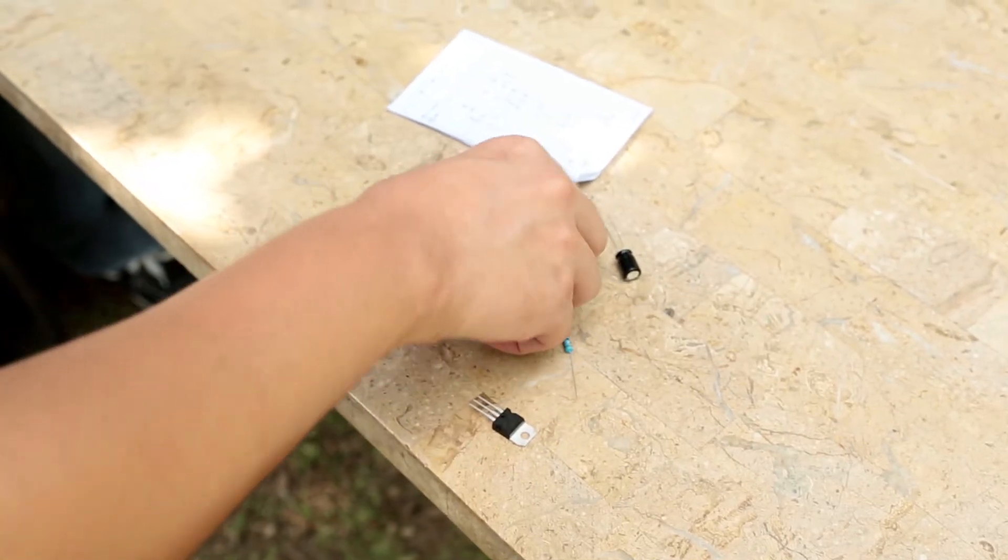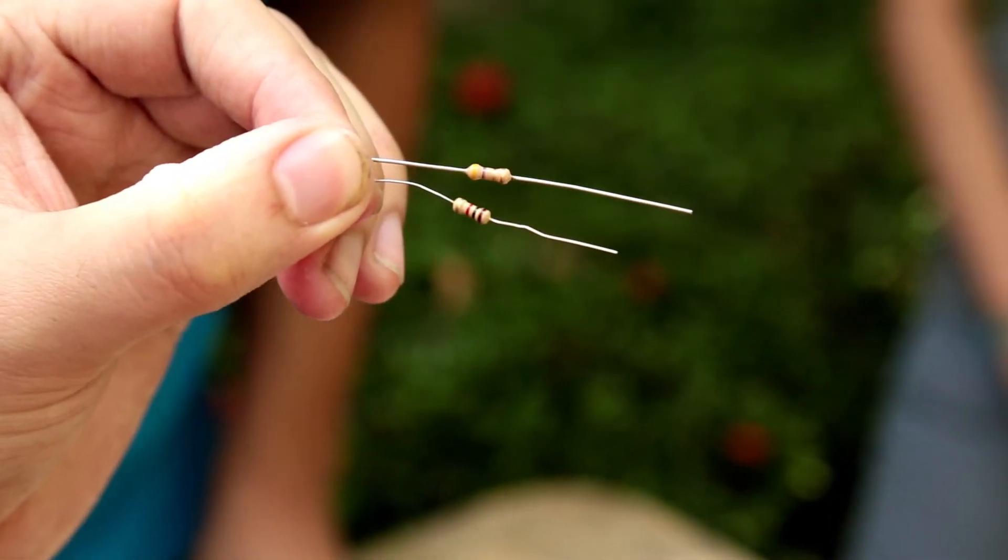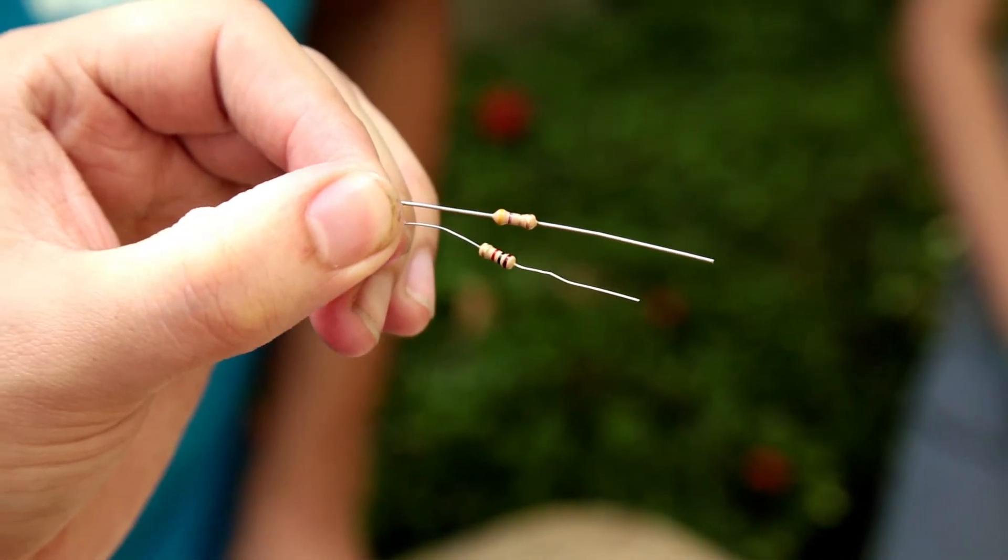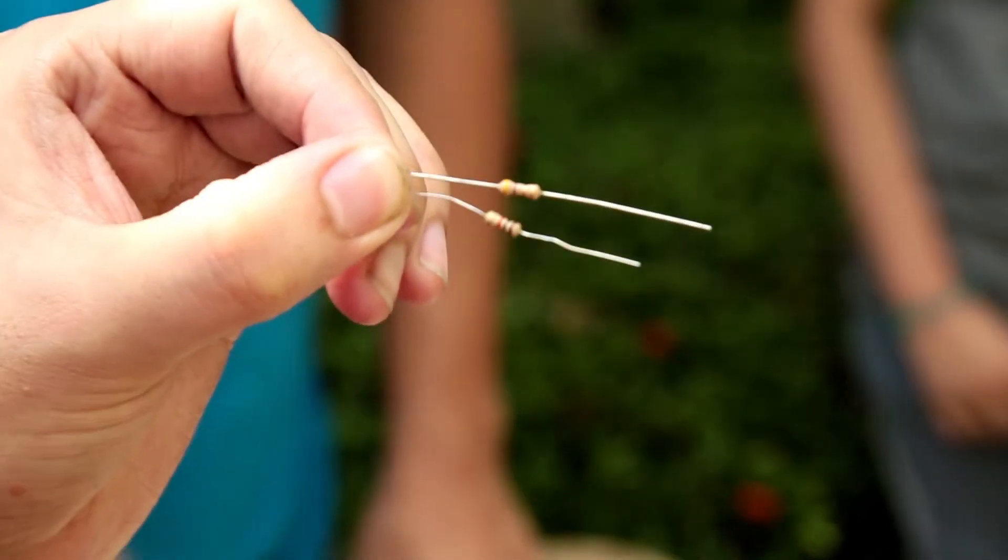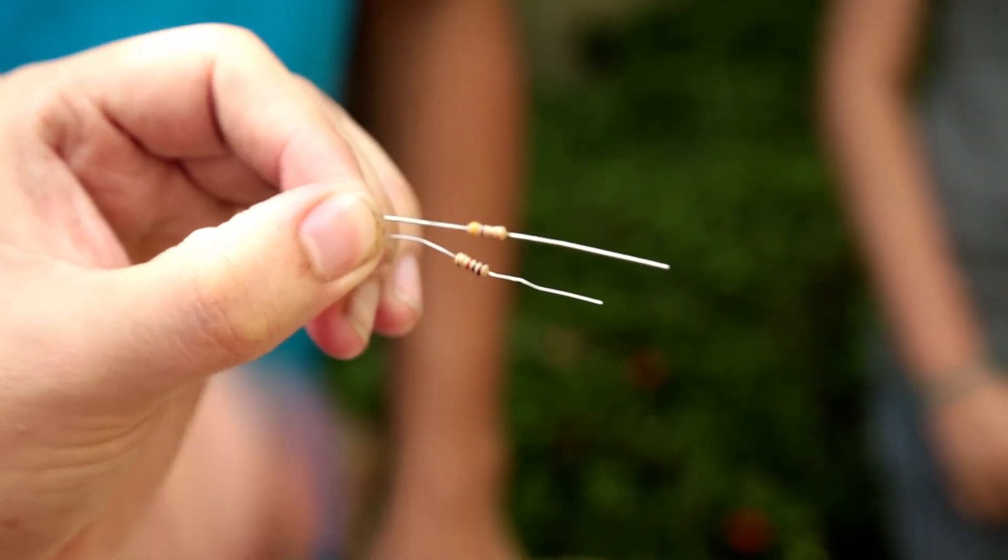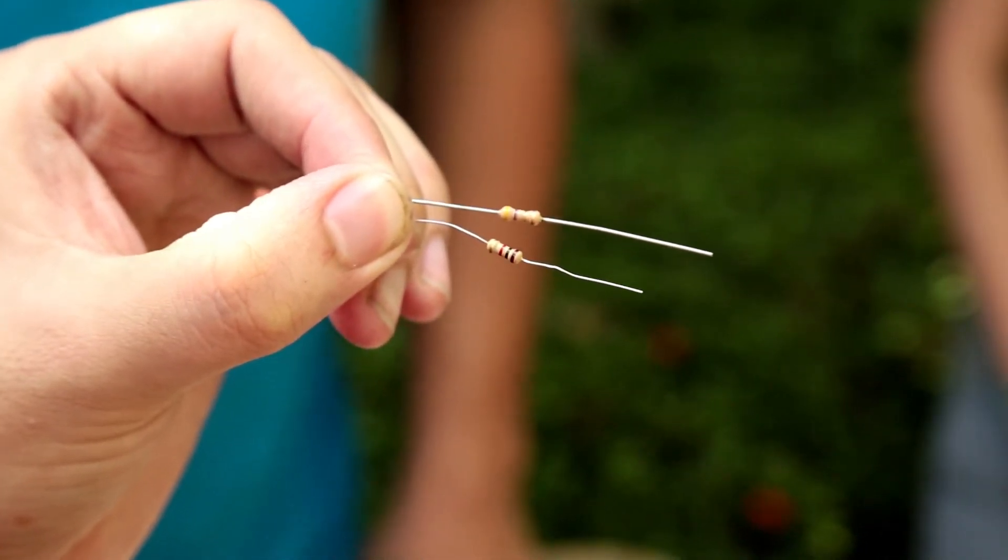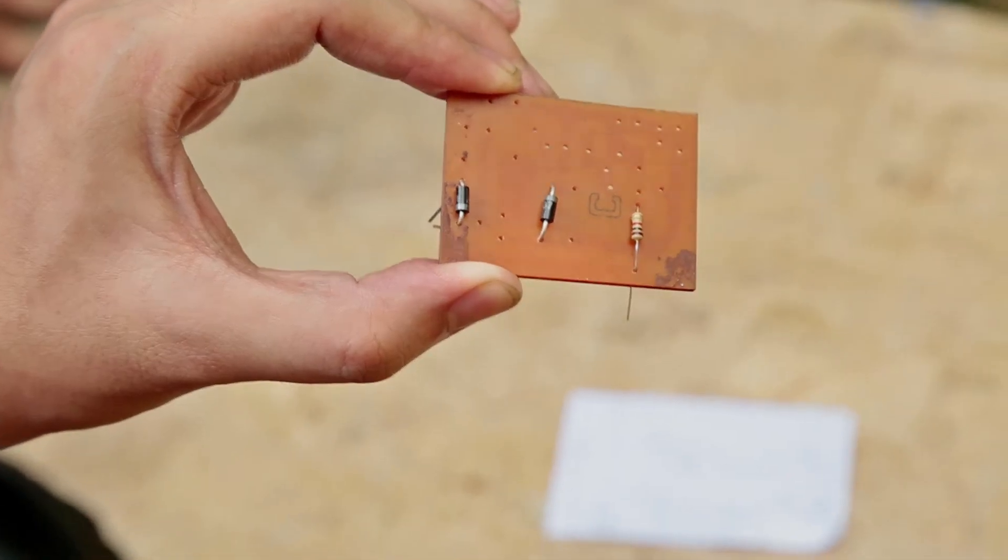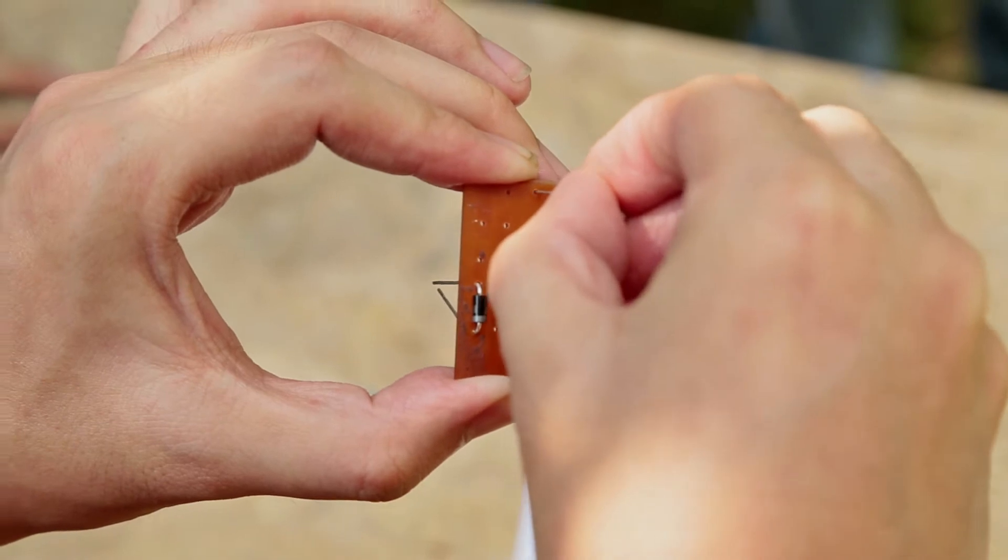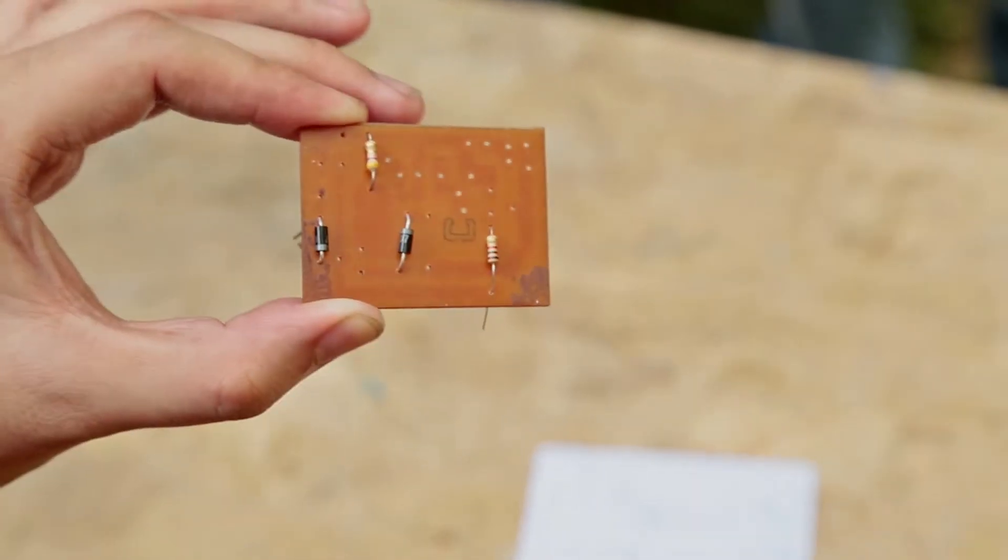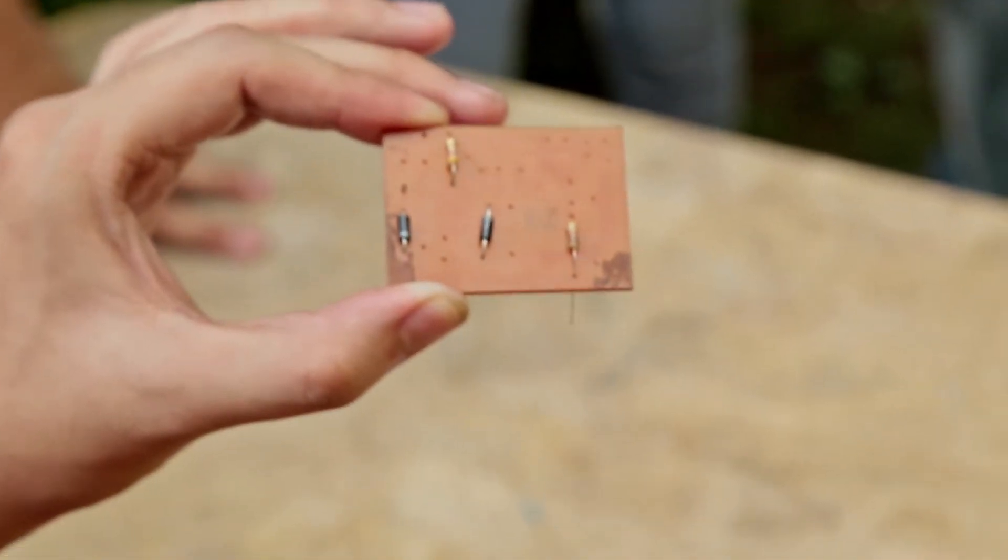Now we're inserting the resistors. Resistors have certain color bands—they look similar, but if you look closely, there are different color bands that represent different values. We'll insert them as well, making sure they are compact and as close to the board as possible.